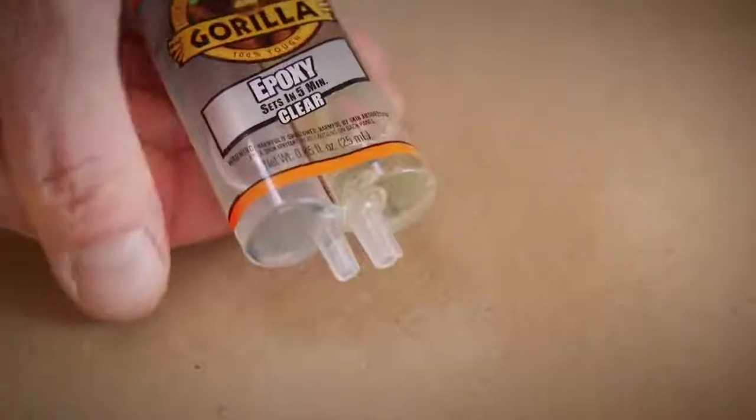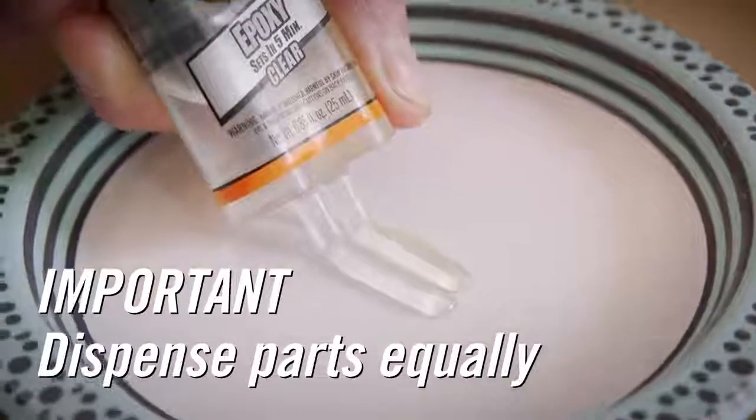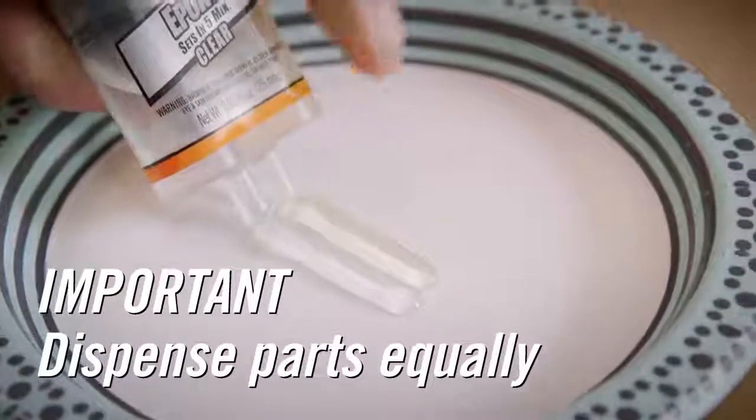For the syringe, you will just need to remove the black cap and push down on the dispenser firmly, and the epoxy will dispense in equal parts.